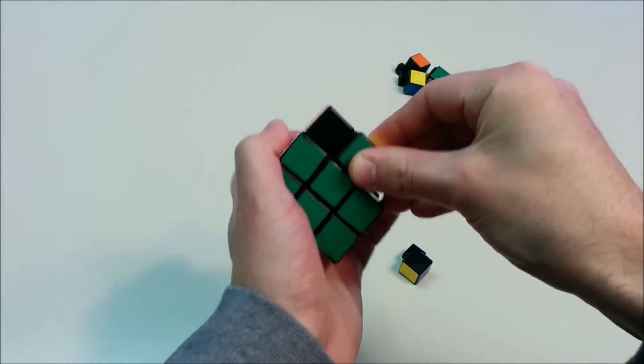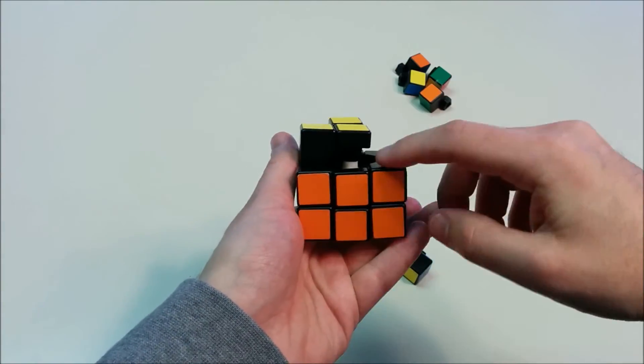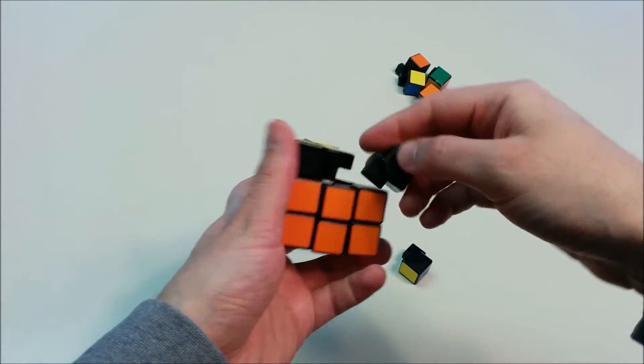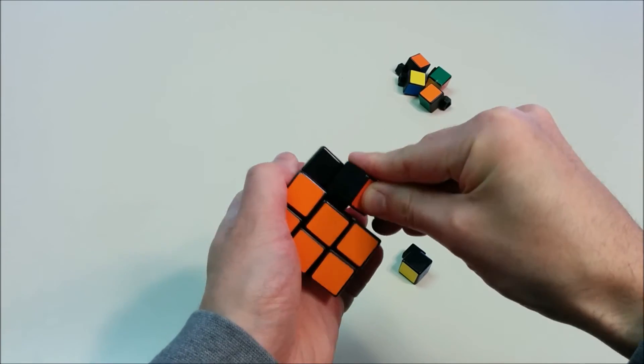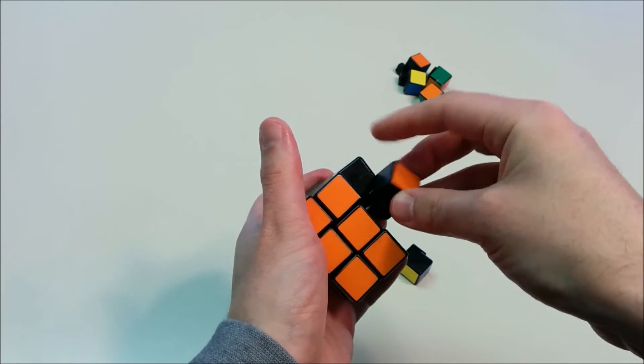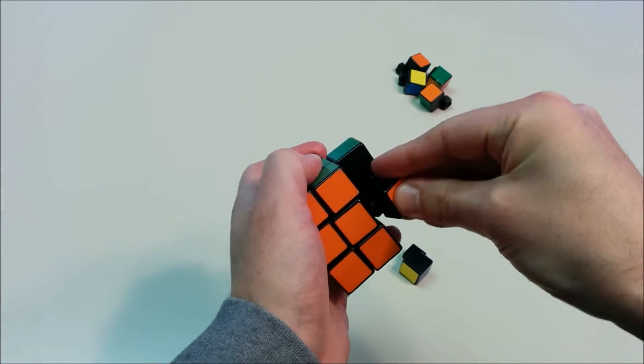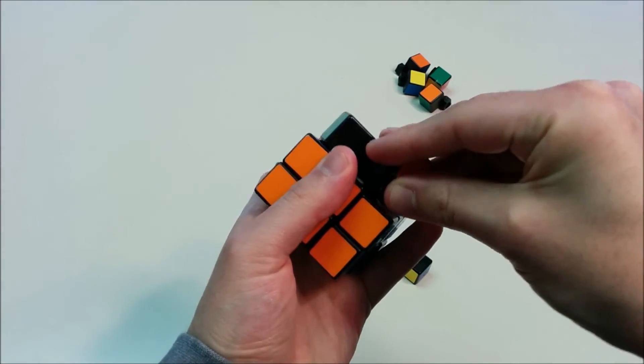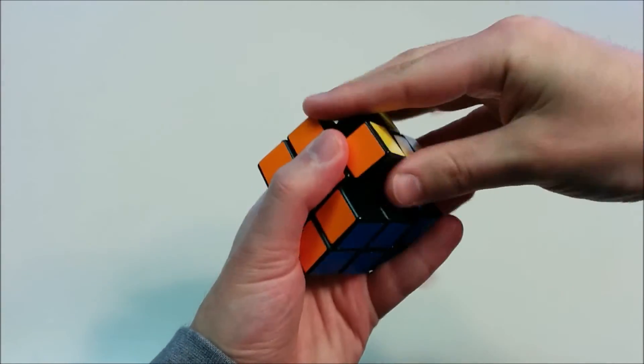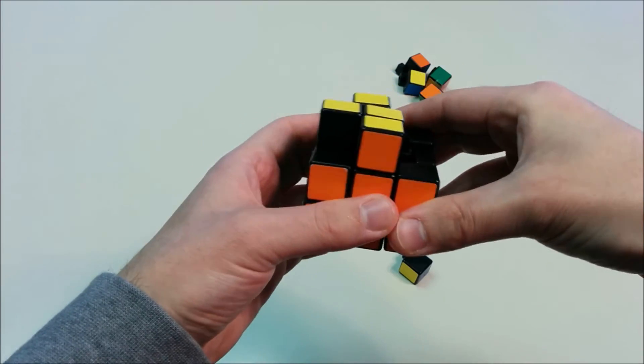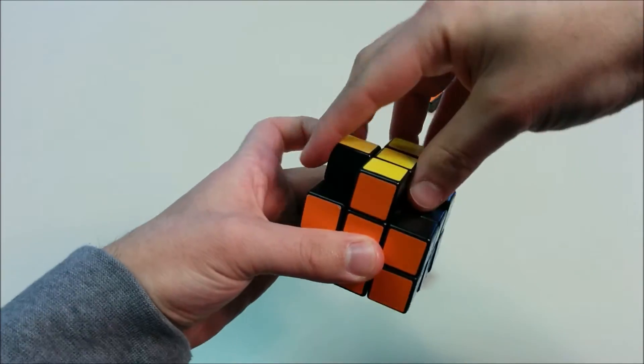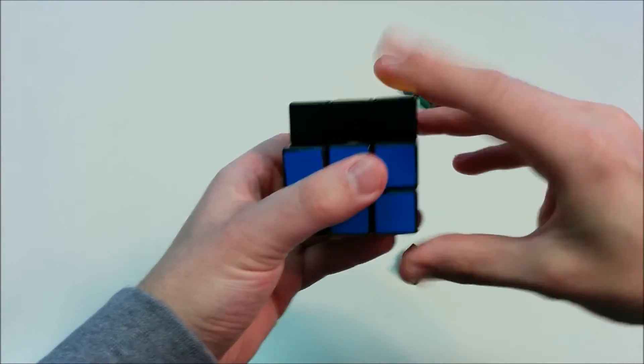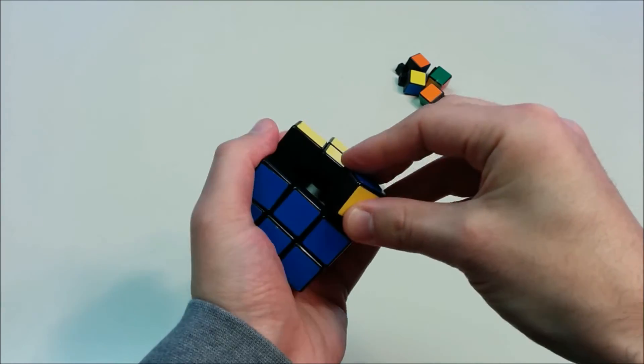We're going to go around the rest of this layer and put in the remaining edge pieces. When we actually solve the videos for the top layer, we're going to do it slightly differently. We're going to create this yellow cross without regard to matching the other sides. But then we're going to show you how you can move these pieces around. So ultimately you will create a yellow cross where all of the edge pieces match the center pieces of the sides.